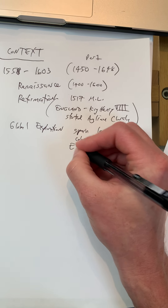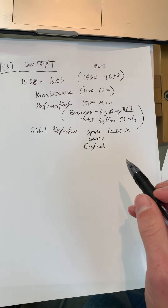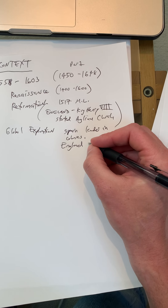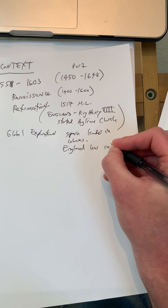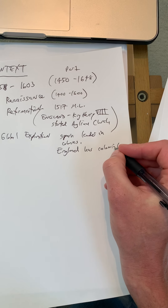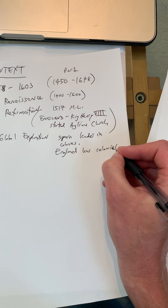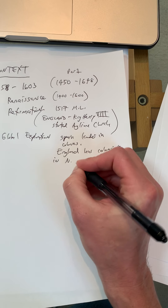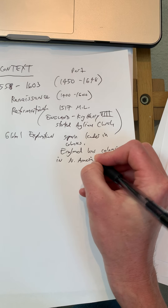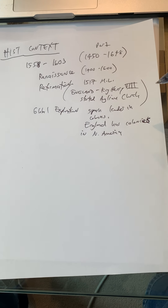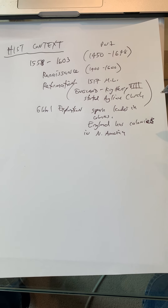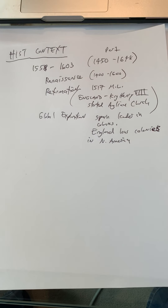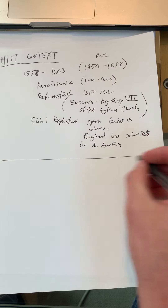The third chapter during this time has to do with global exploration. Even though Spain is the leader in colonies, England also has colonies in North America. Remember, Queen Elizabeth is known as the Virgin Queen, and Virginia was named after her during her reign. That's a basic historic context.